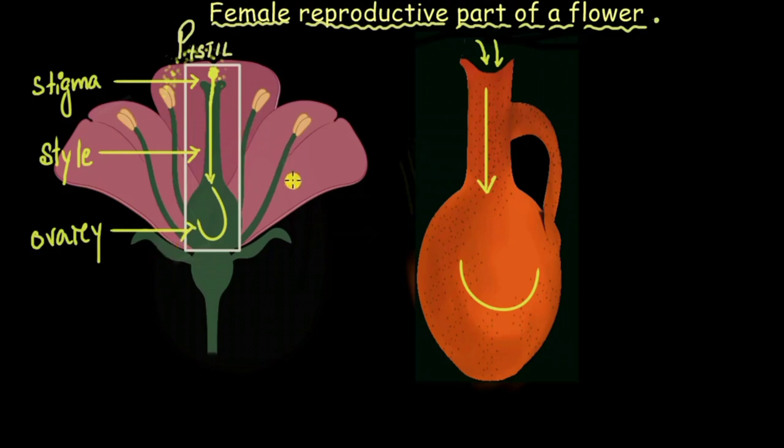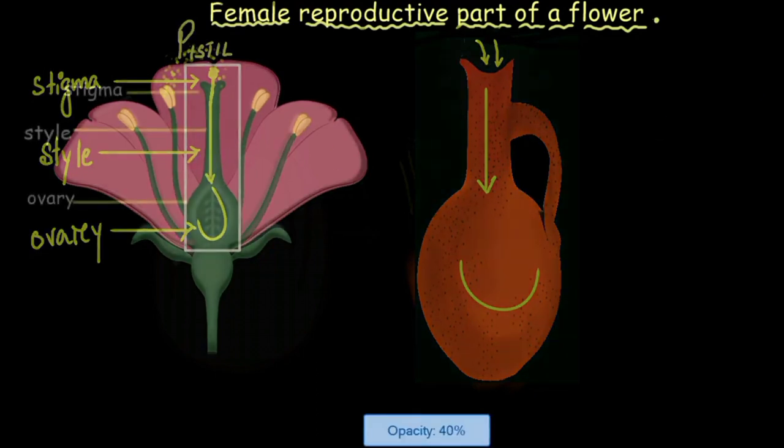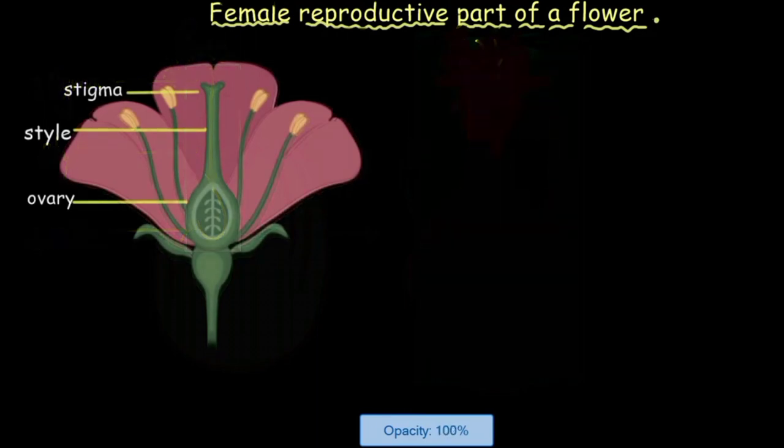Well this is all about how the pistil or the female reproductive part looks from the outside. Now we also need to look what is on the inside of the pistil. So let's zoom in to the inner side of the pistil.